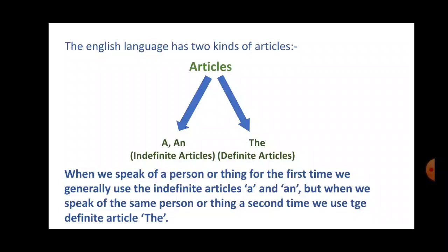But when we speak of the same person or thing a second time, we use the definite article the. So when we talk about something for the first time, we use articles a and an. But when we speak of the same person the second time or again and again, or the particular person, we use the.